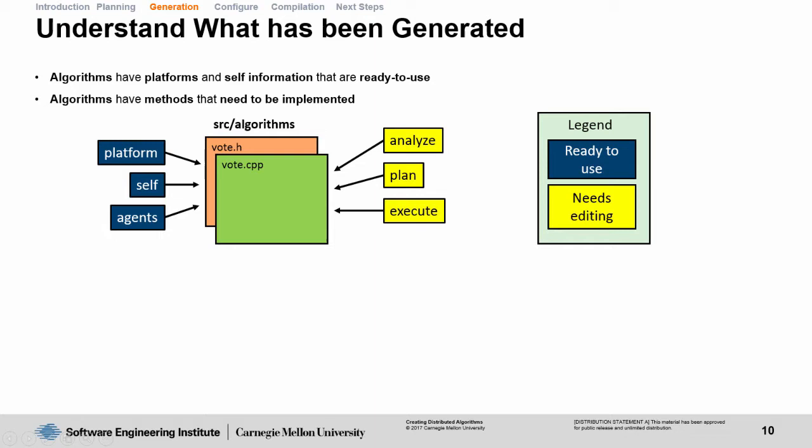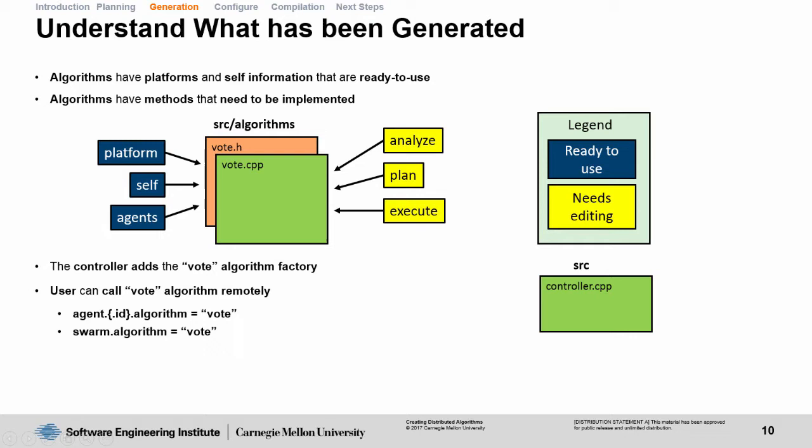The controller has also been modified to include a vote algorithm factory. This factory allows users to call vote remotely by either modifying the agent.id algorithm variable or the swarm.algorithm variable. Agent.id's algorithm variable is specific to a certain agent—you're telling agent.zero, for instance, to run vote by itself. If you run swarm.algorithm equals vote, then you're telling the entire swarm to also run the vote algorithm.